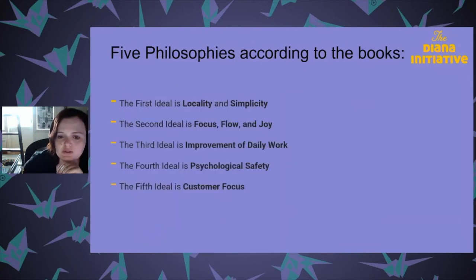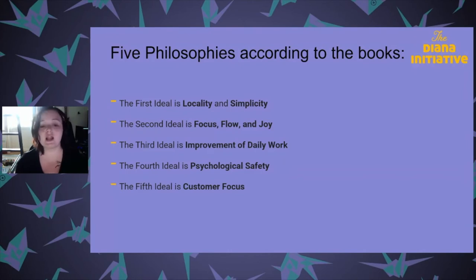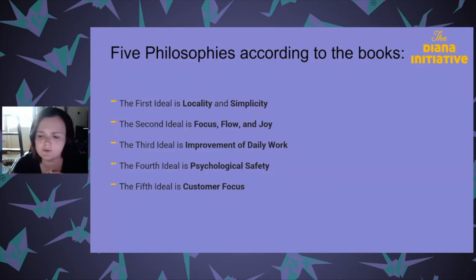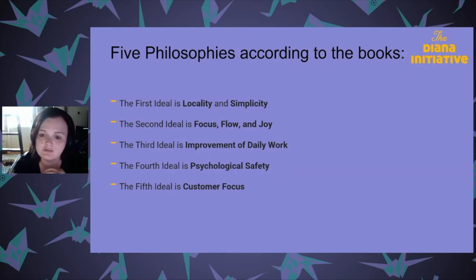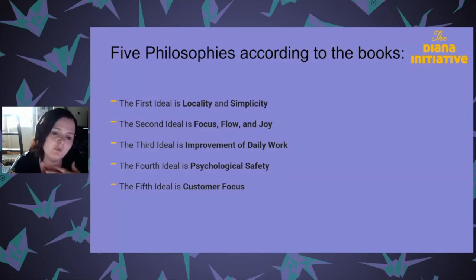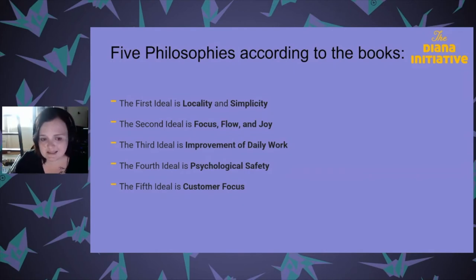I realized that where most development teams were failing was in the five philosophies from the book. It has a way of framing the dysfunctional family that is operations and development. I realized that security often comes in, kicks down the door, and says 'we found these vulnerabilities, fix them.' Looking back, I was like the bully — not once in 12 years did I think to pass on knowledge. The first ideal is locality and simplicity: how easy is it to onboard? Do we make it hard by going back and forcing developers to fix things? The second ideal is focus, flow, and joy.